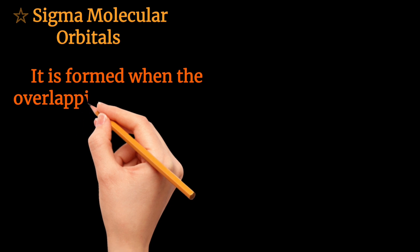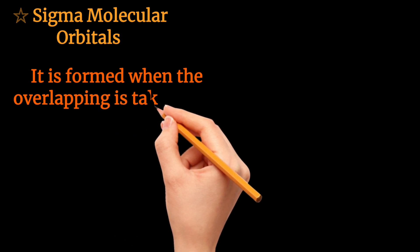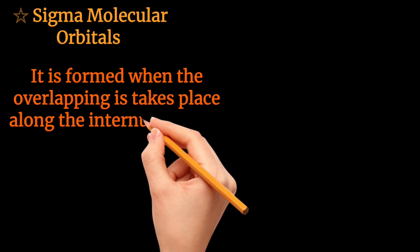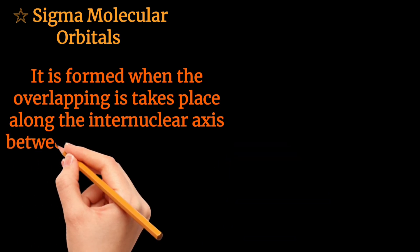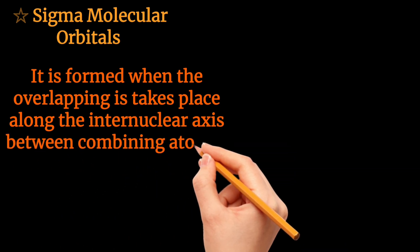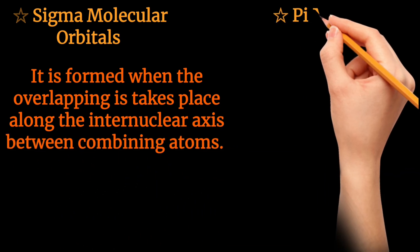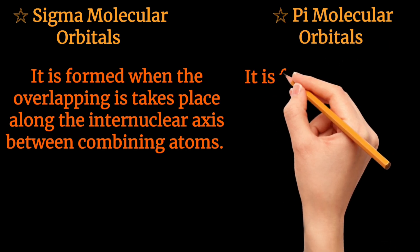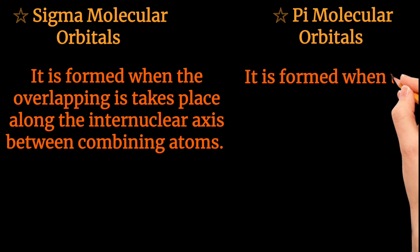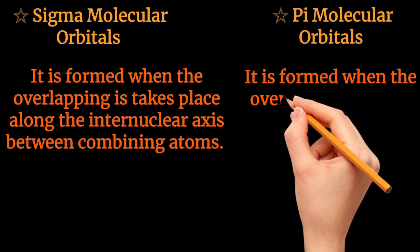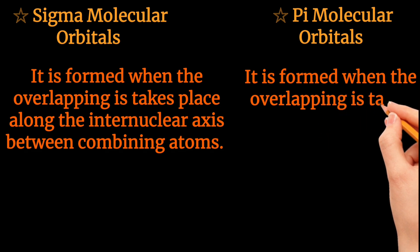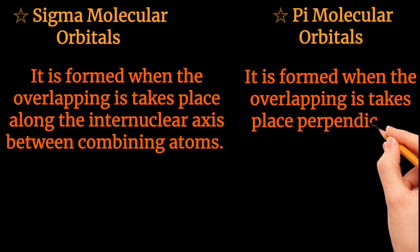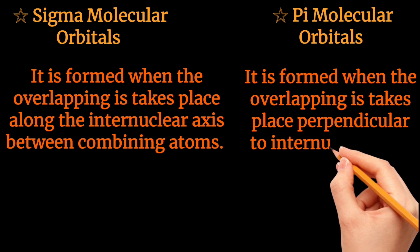Next, sigma molecular orbitals are formed when overlapping takes place along the internuclear axis between the combining atoms, while pi molecular orbital formation takes place when overlapping occurs perpendicular to the internuclear axis of the combining atoms.